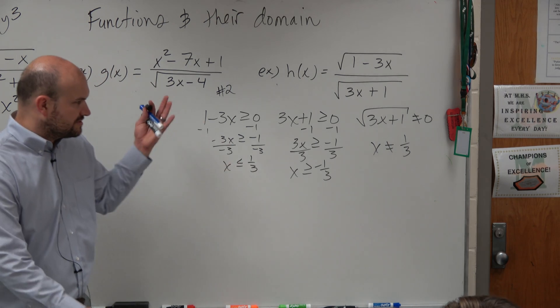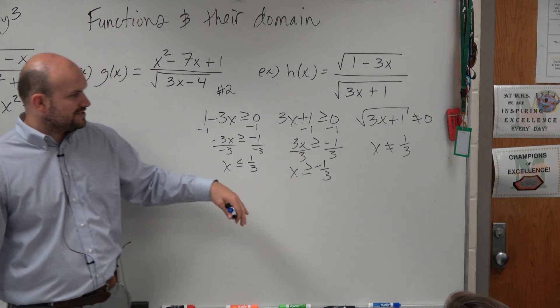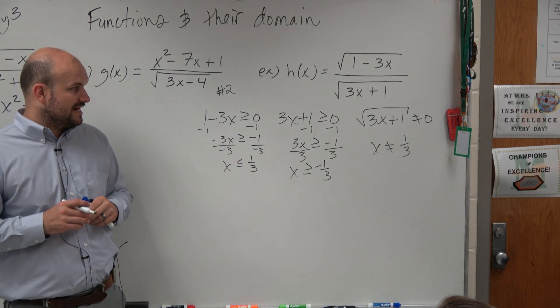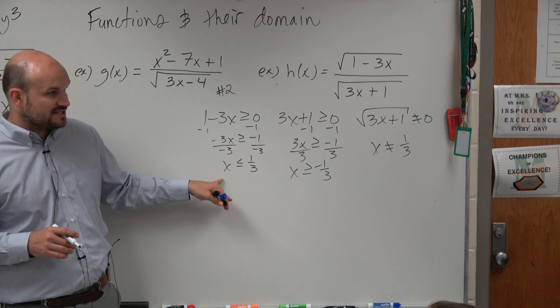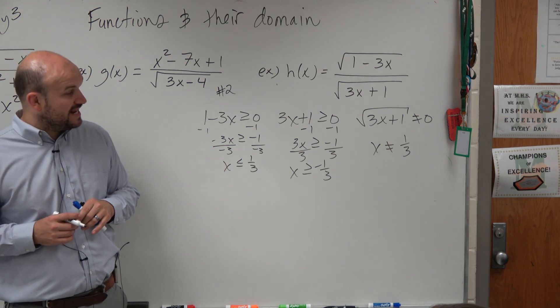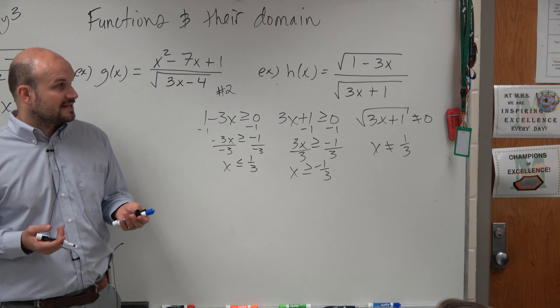So in this one, I'm just skipping my steps because I just solved it twice in a row. We know that that's going to be x cannot equal 3. This one says x is less than 1 third. This one says x is greater than negative 1 third. And x cannot equal 1 third.